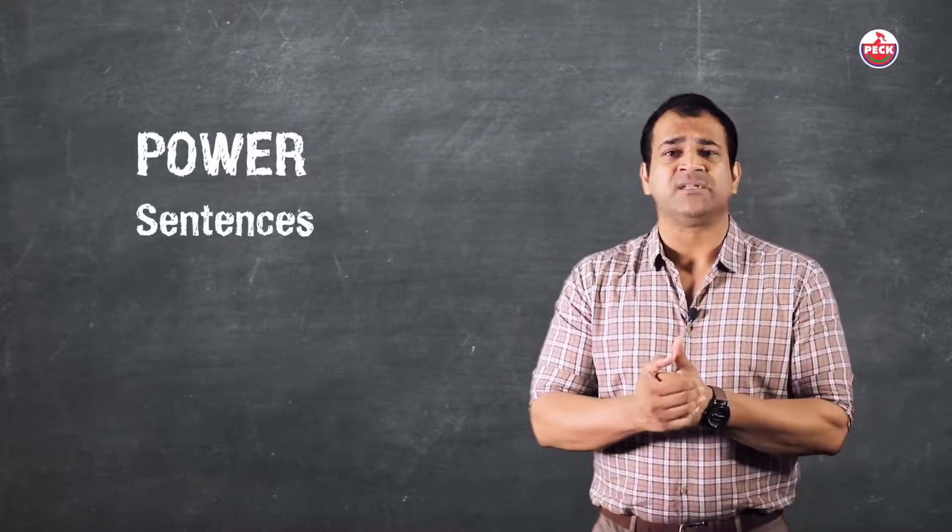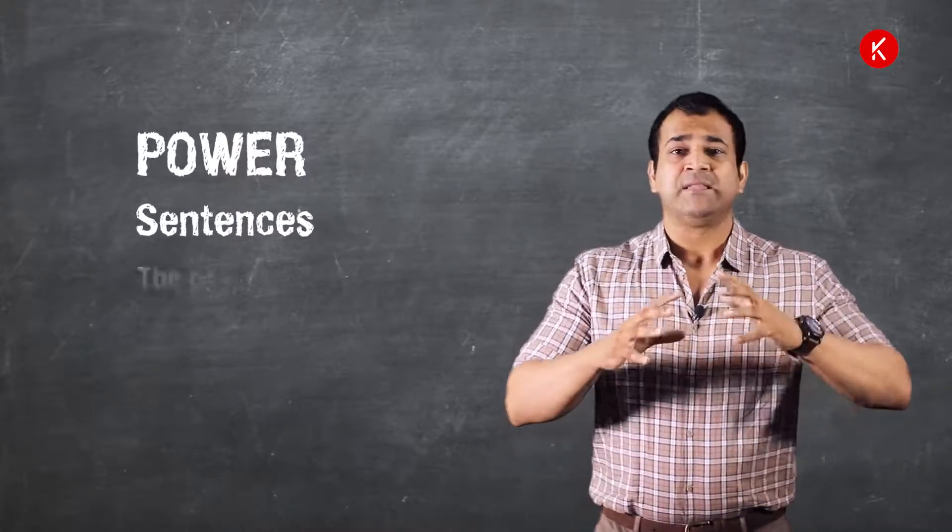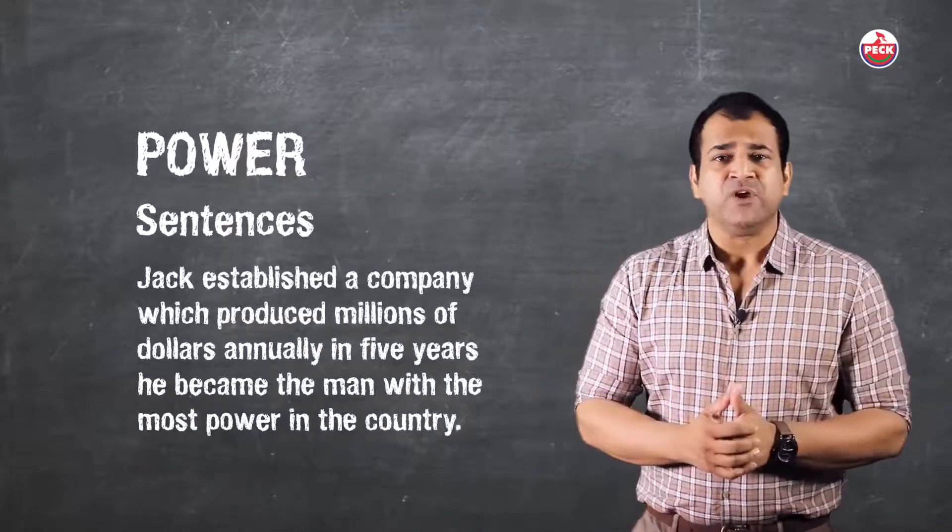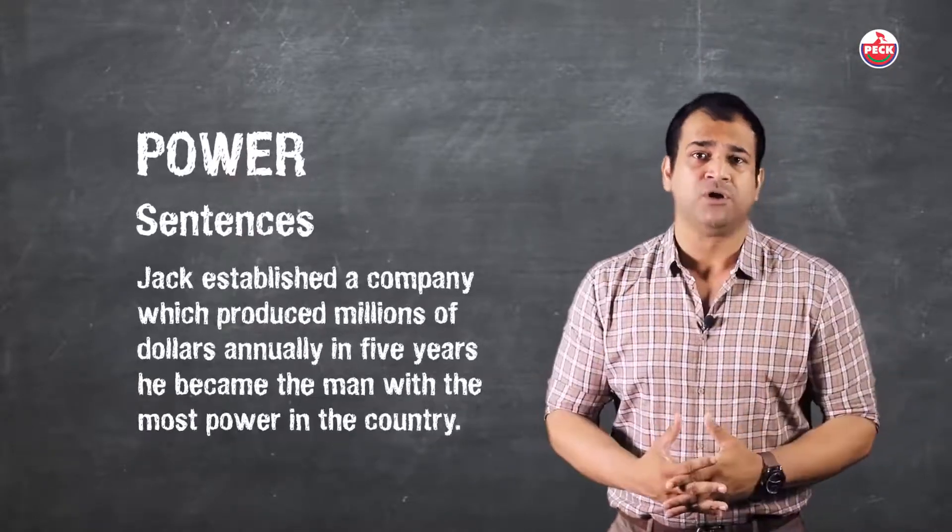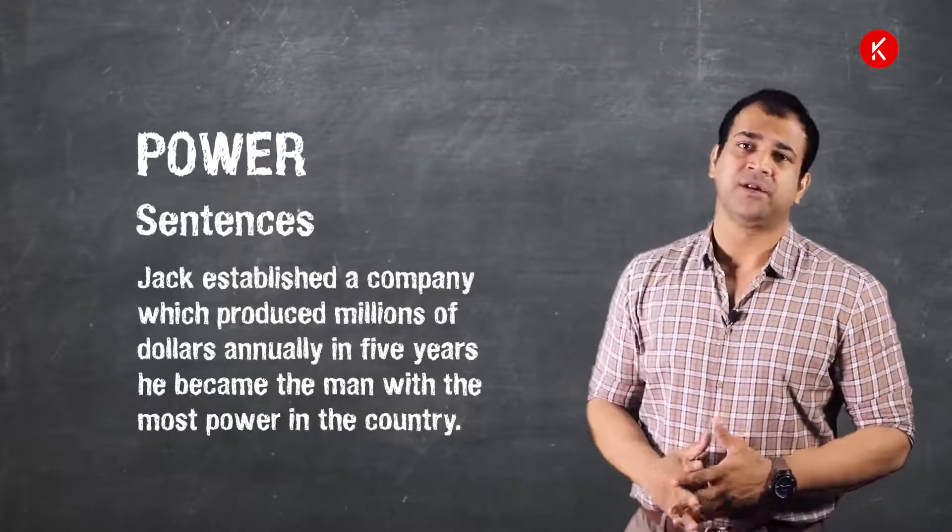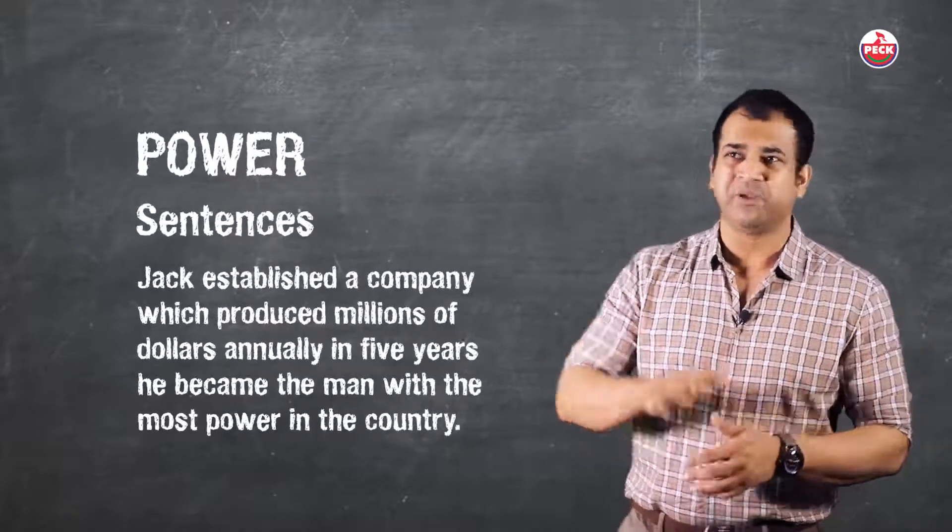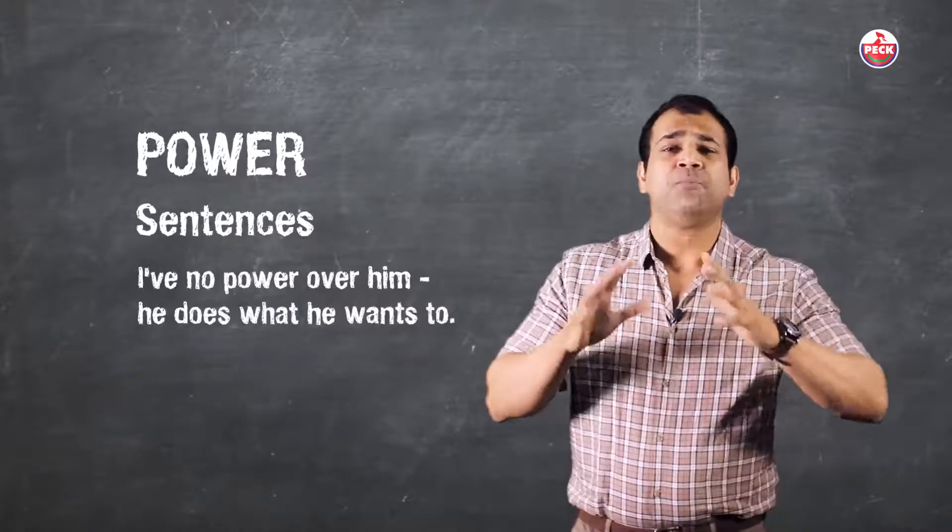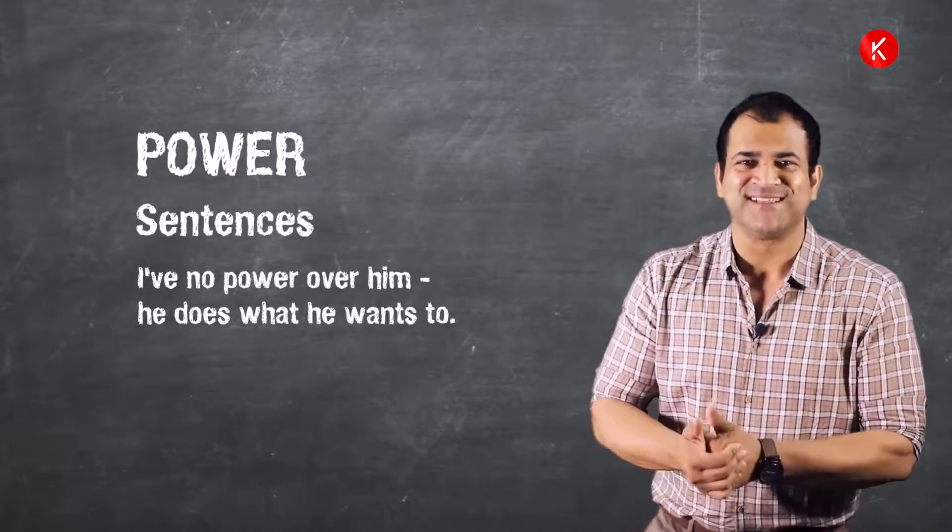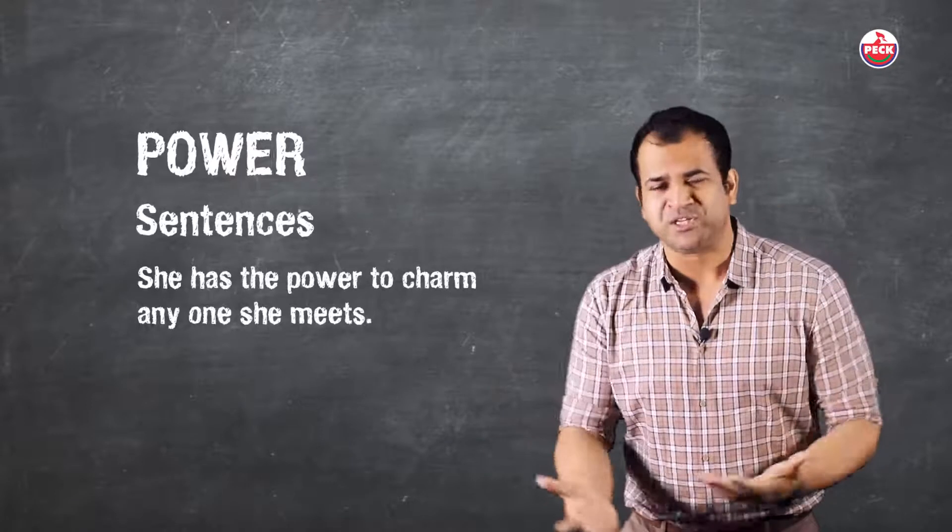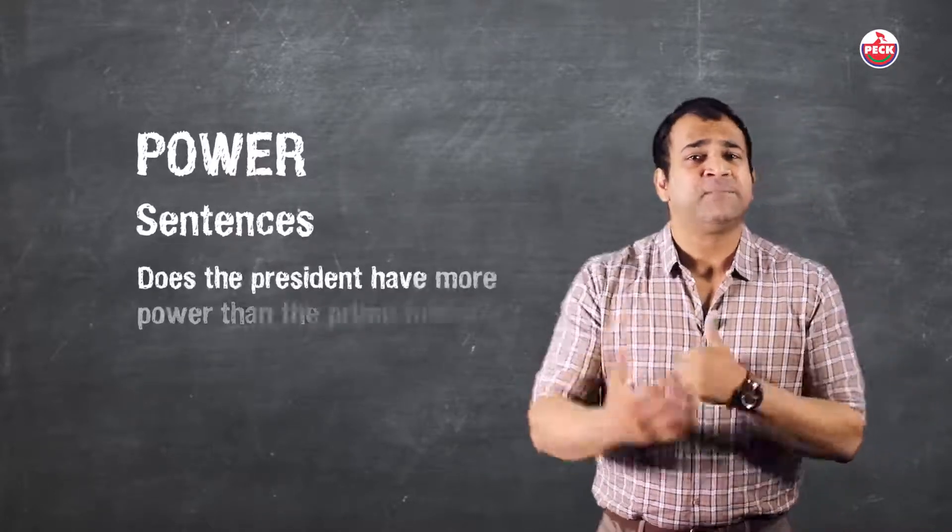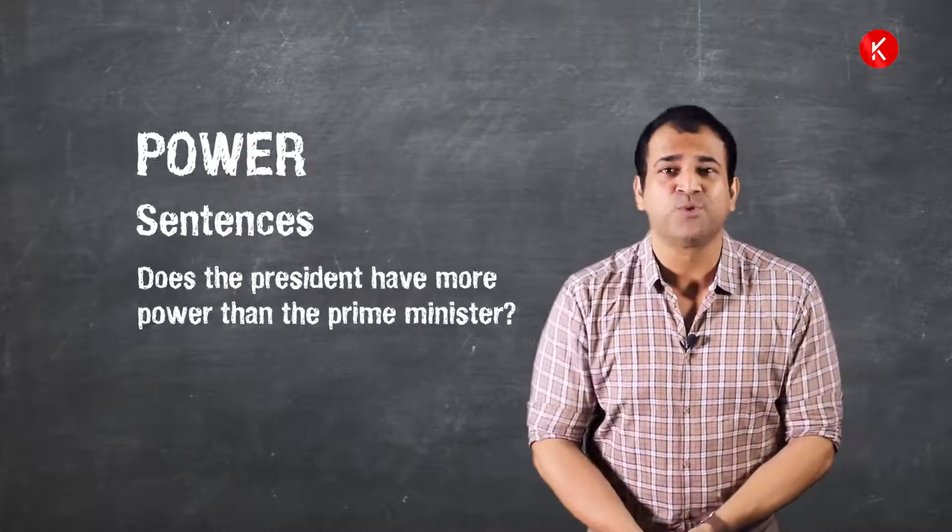You can say the power of speech. Jack established a company which produced millions of dollars annually. In five years he became the man with the most power in the country. He worked hard so he became very powerful. I have no power over him. He does what he wants to. Our parents used to tell this: He has the power to charm anyone she meets, very charismatic. Does the president have more power than the prime minister? That is also one form of sentence.